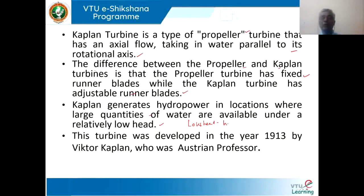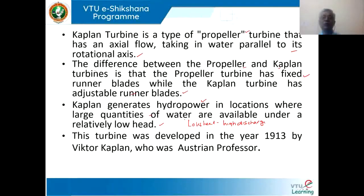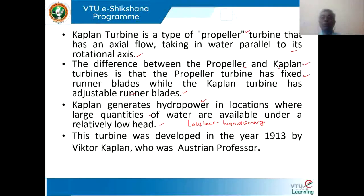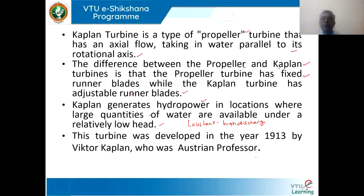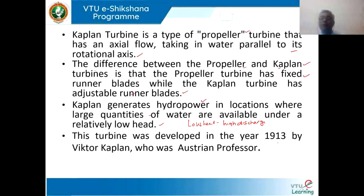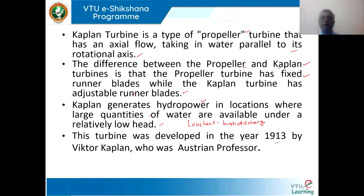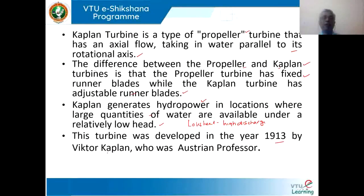Kaplan turbine is classified as low-head and high-discharge. If these are the two conditions available, then we go for a hydro-power project with a Kaplan turbine. Medium-head turbines are classified as Francis turbines, and for high-head turbines, we use impulse turbines or Pelton wheel turbines. This is one of the most remarkable research done in the 20th century by Victor Kaplan, who was an Austrian professor.